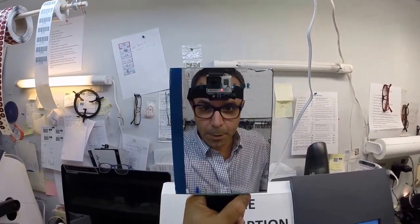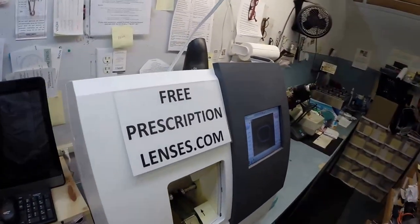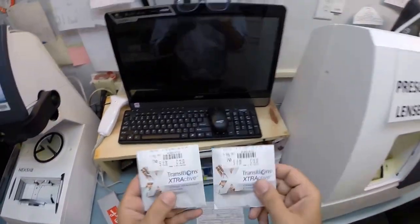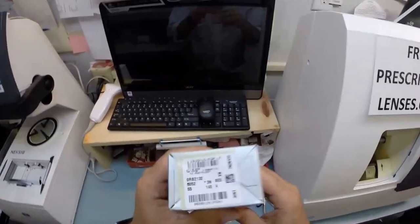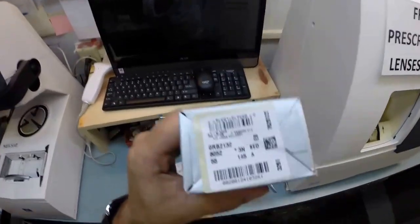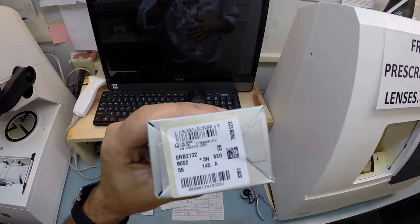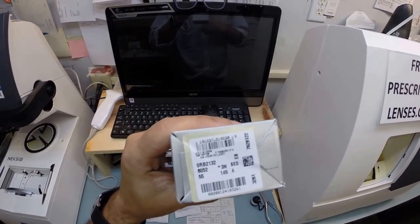Hey Eric in Kellogg, Idaho. Matthew here with FreePrescriptionLenses.com and with the help of my GoPro camera I'm going to show you how I cut transitions extra active for your Ray-Ban 2132 new Wayfarer color 6052, which is the black crystal in the 55 eye size.